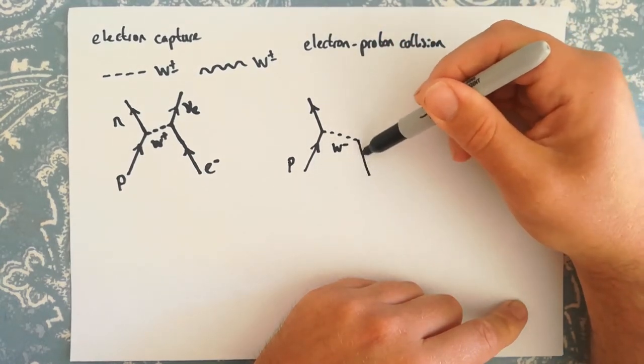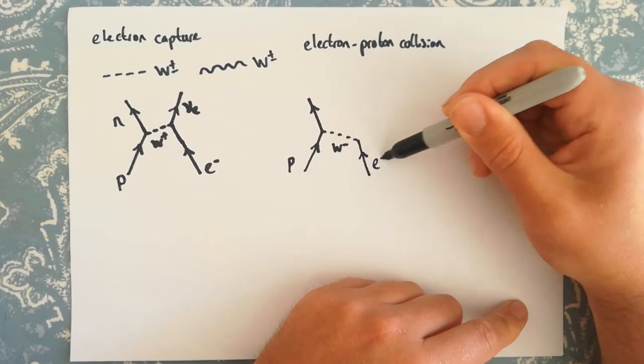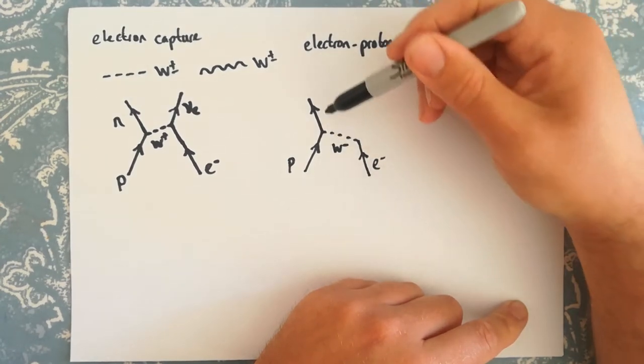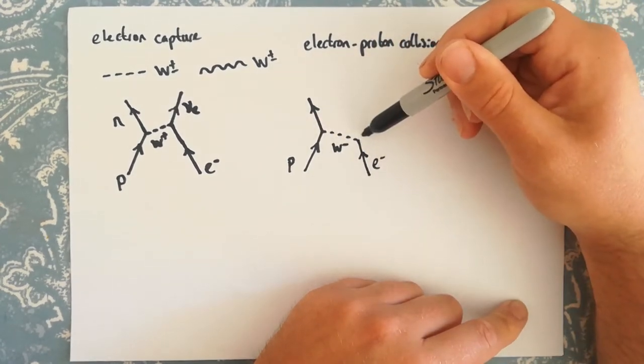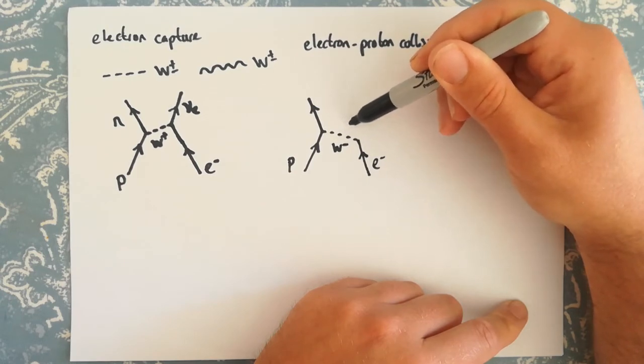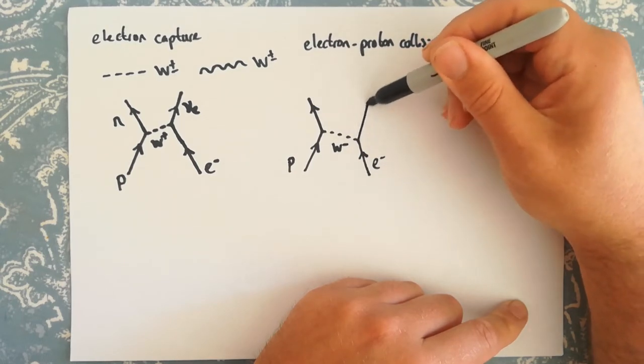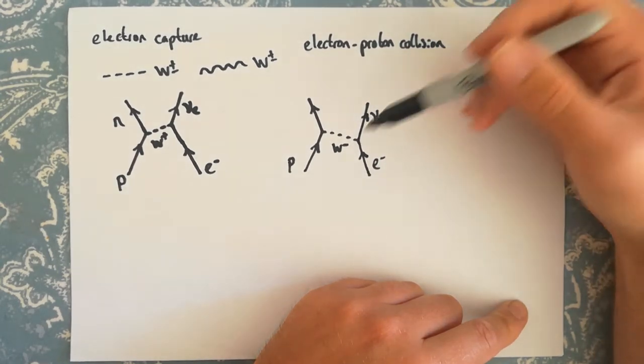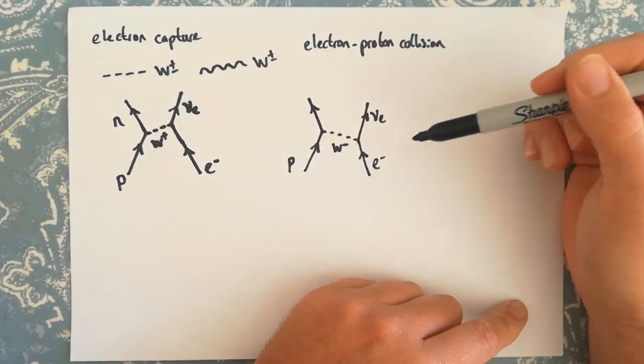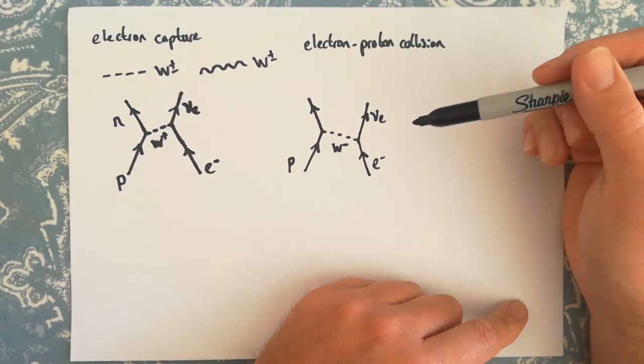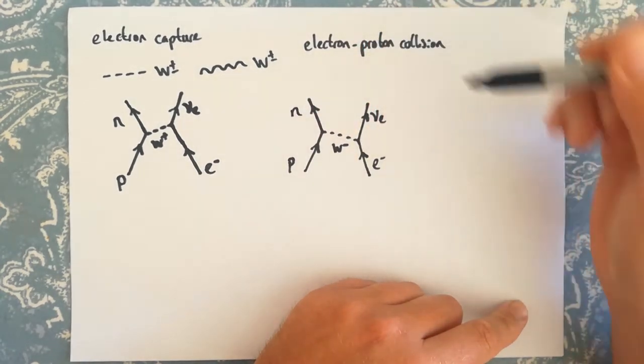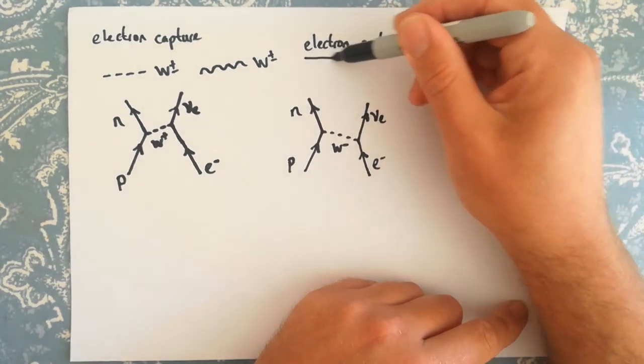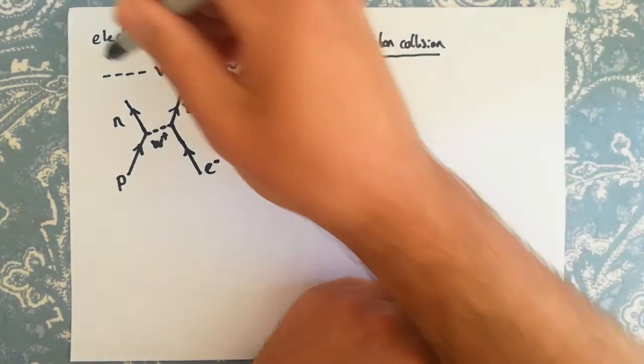So again, we're starting with a proton and an electron. This time it's the electron that's going to emit a W minus boson, change into an electron neutrino. The proton absorbs the W minus boson and turns into a neutron. So for the exam, you need to know the names of those two processes and be able to draw those Feynman diagrams.